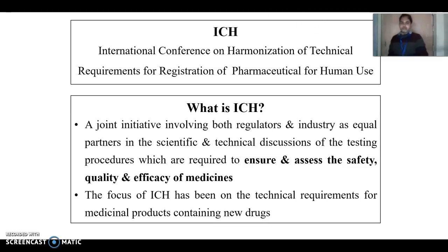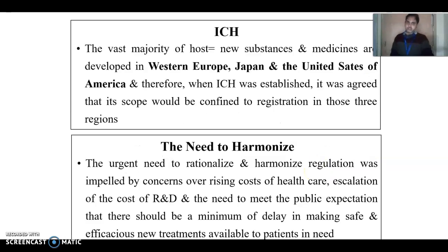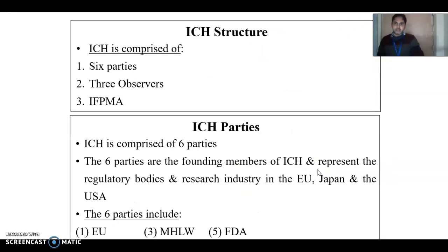ICH is a joint initiative of both regulators and industry as equal partners, and the major objective is to ensure and assess the safety, quality, and efficacy of medicines. The founding members are EU, Japan, and the United States. This is the initial structure of ICH: 6 parties, 3 observers, and representatives from industries.